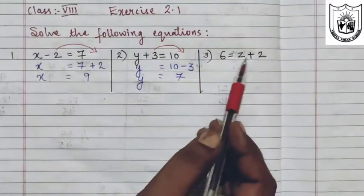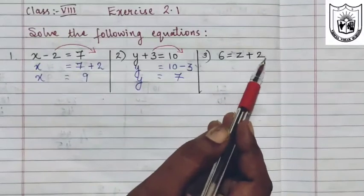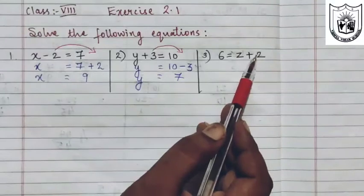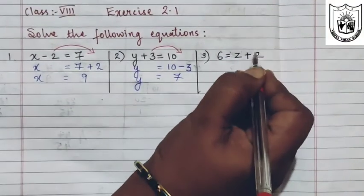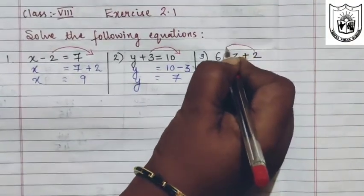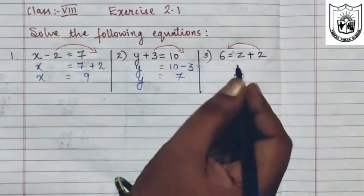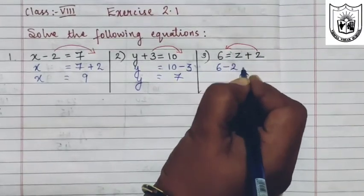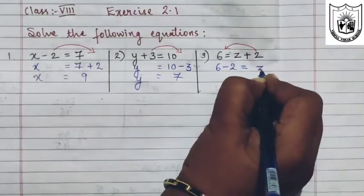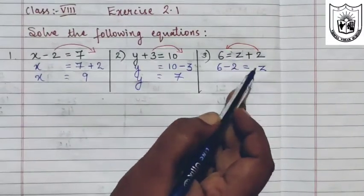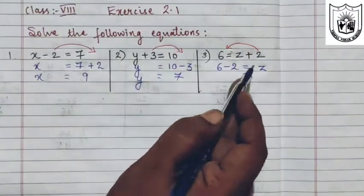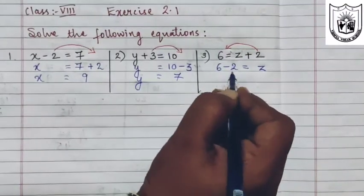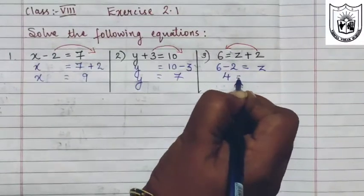Look at the third problem: 6 equals z plus 2. So z is the variable. We will transpose this number to the left hand side. Positive 2 when transposed to the left will become negative. So 6 minus 2 will be 4, equals z.